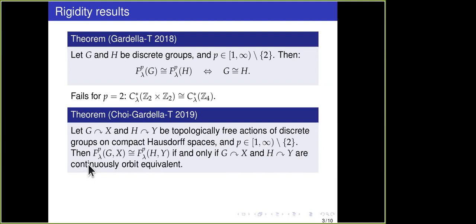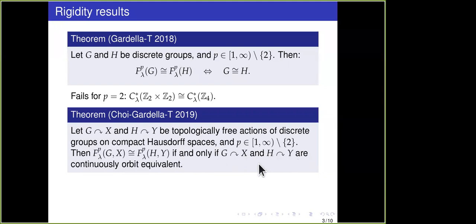What is continuously orbit equivalent? This means the spaces X and Y are homeomorphic by a fixed homeomorphism, which also identifies the orbits — if I pick a point in X and let G act, I get an orbit, and moving this to Y and letting H act there, I get the same orbit. Such an orbit equivalence comes with cocycles, and these cocycles are supposed to be continuous — this is what the word 'continuously' refers to.